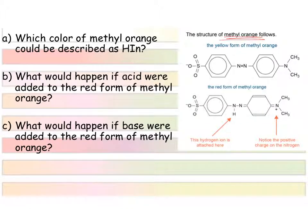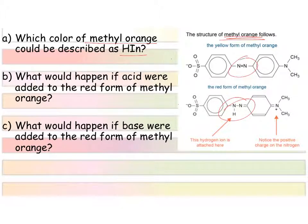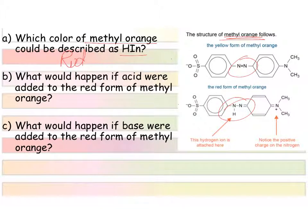Now let's look at methyl orange. Given the structures for both forms, we need to identify which color is the acidic form. Definitely this one — it's got the hydrogen that can be given off. The other form has lost the hydrogen. So the bottom one, the red one, is going to be the acidic form — that's our HIn. If we added acid to that red form, all it's going to do is get more red.